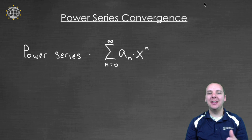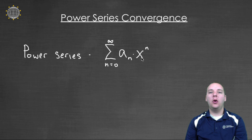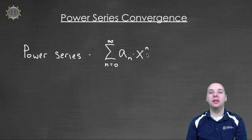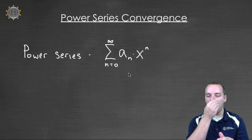A power series is an infinite series where we take the sum of terms of the form a_n times x to the n. This basically means that your powers of x have coefficients that depend on the current exponent — so x squared will have a different coefficient than x cubed or x to the fourth. These infinite series can be thought of as infinitely long polynomials.